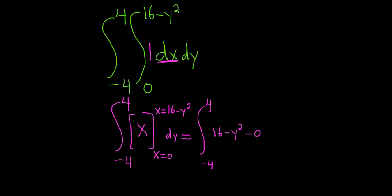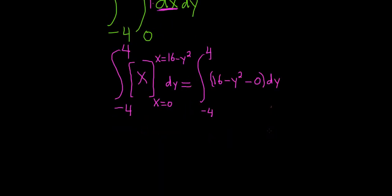Let's keep going. This equals the definite integral from negative 4 to 4 of 16 minus y squared dy. Now I really want to do a trick here. This is the graph of an even function and it's a symmetric interval. Basically you have an upside down parabola, and you're finding the area under this graph.